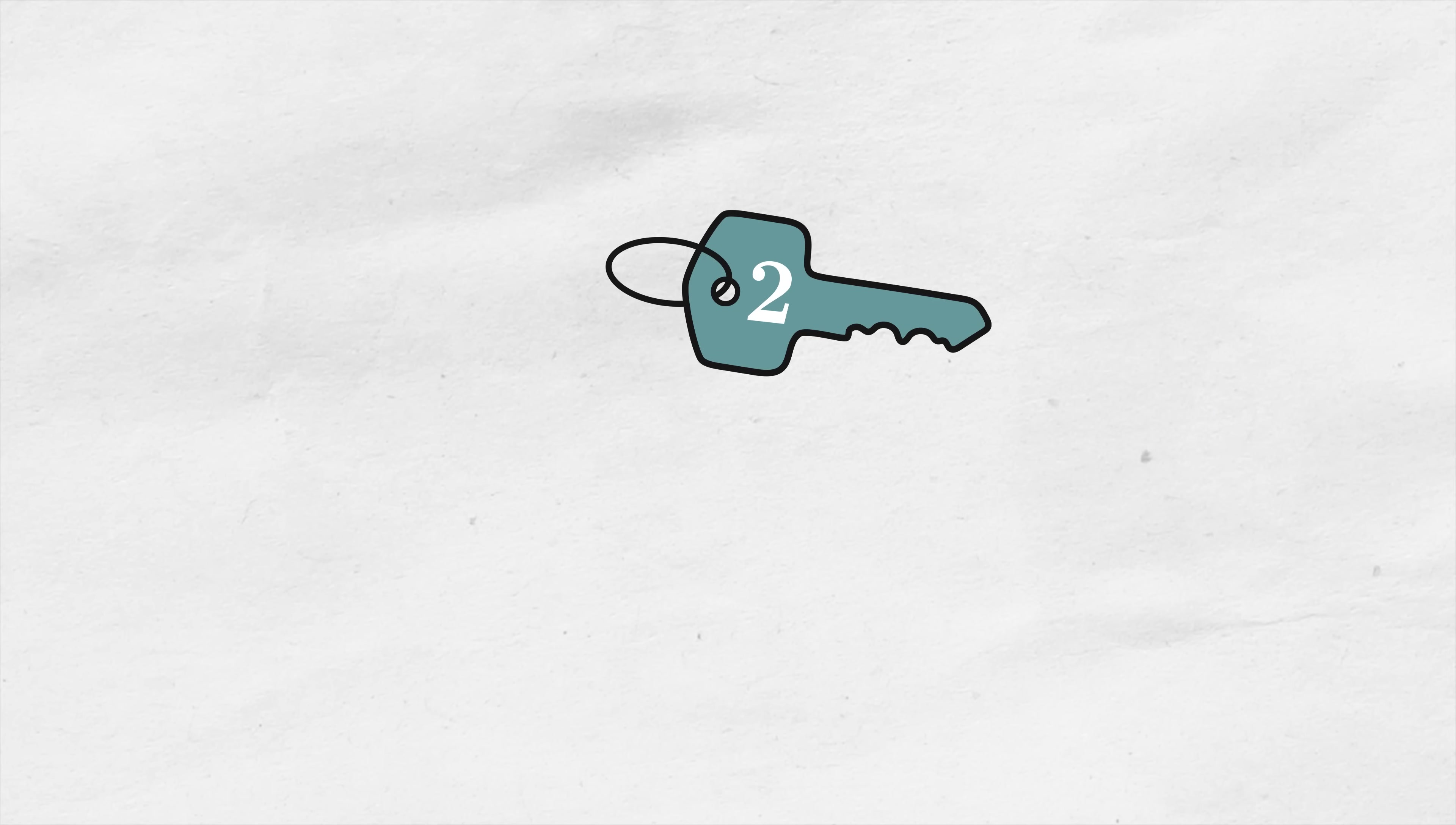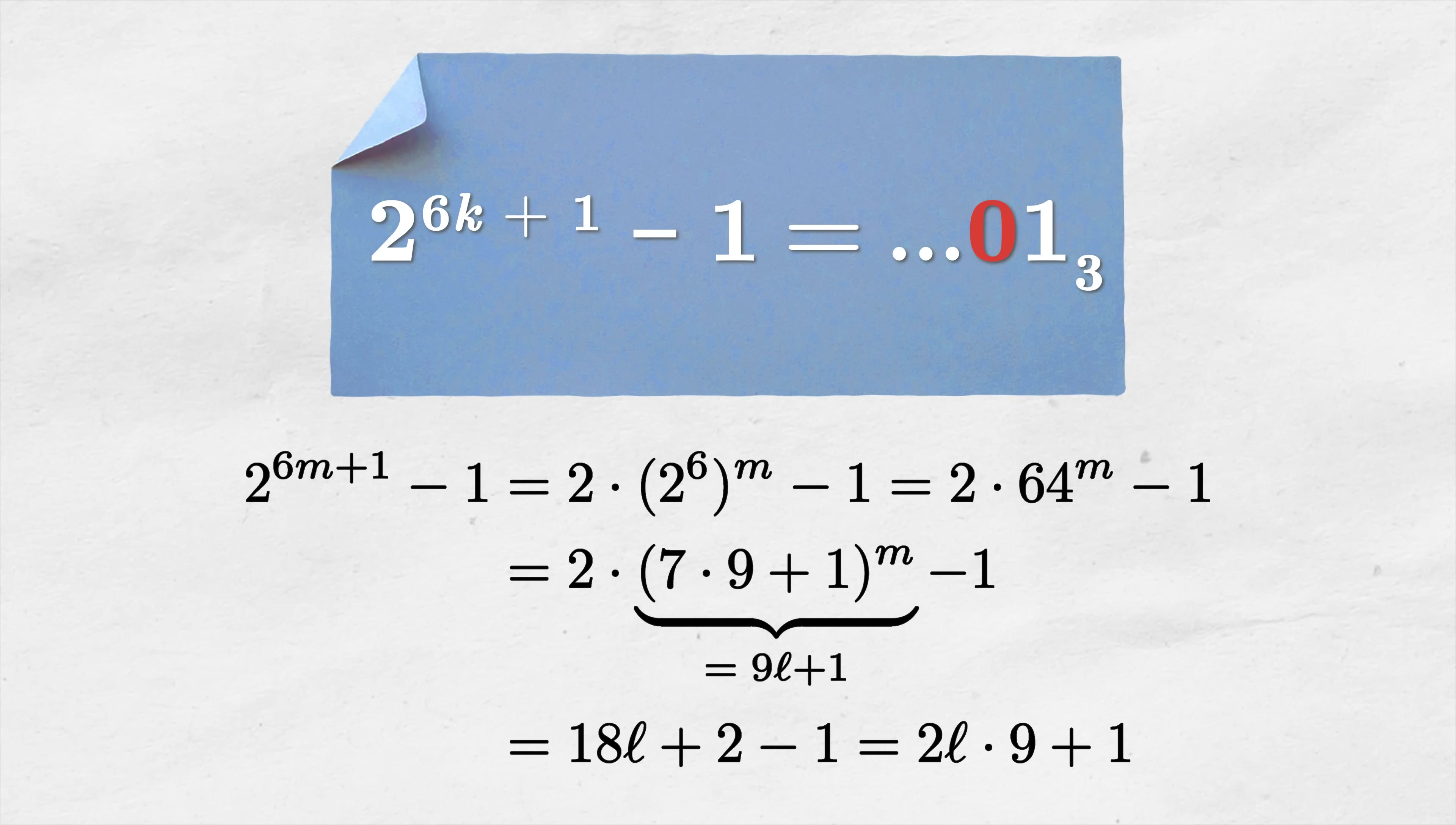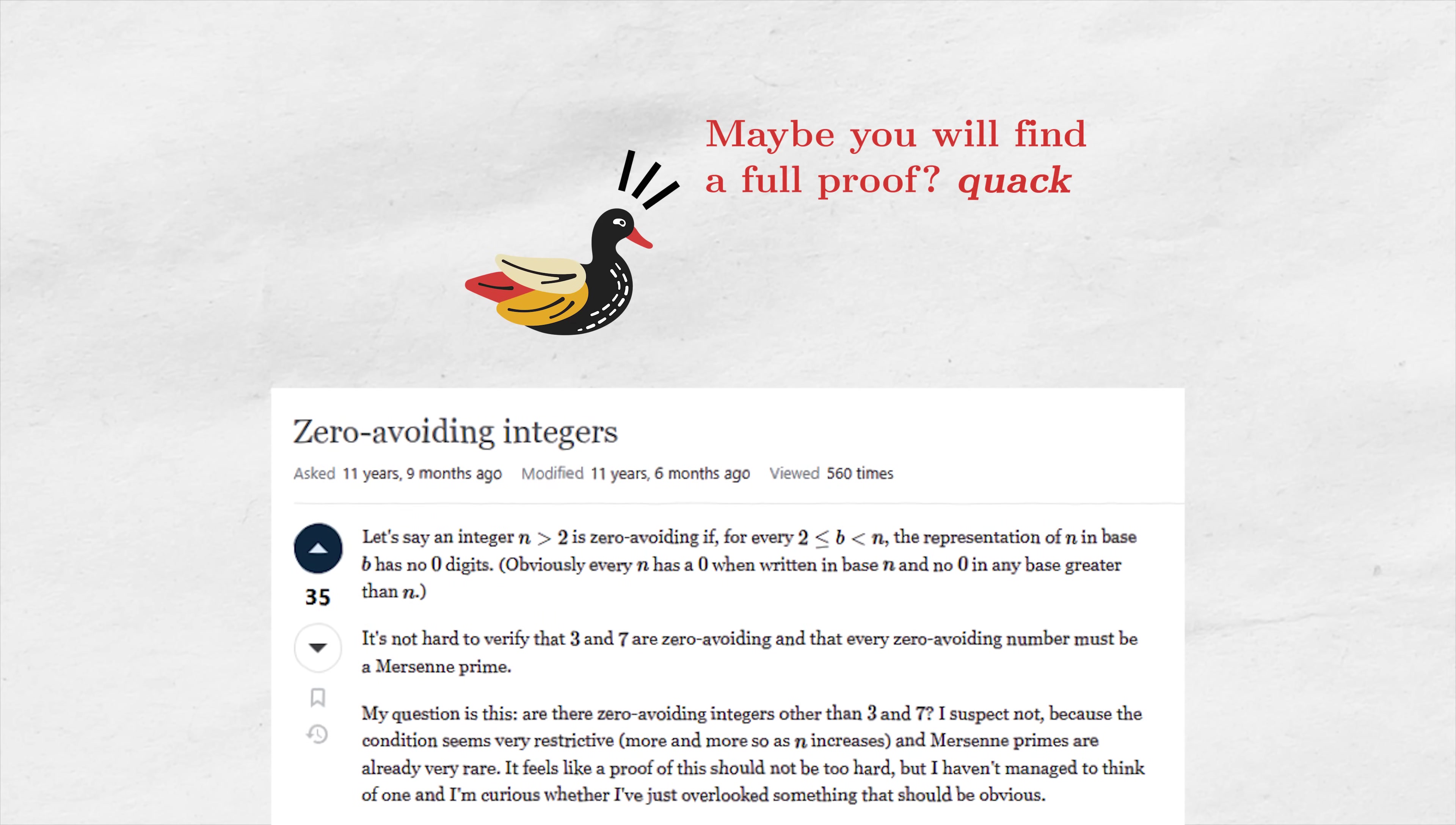And now the key is base 3. For example, we can prove that for primes of type 2 to the power of 6k plus 1 minus 1, the tenth digit in base 3 representation is always 0. It's easily done by considering the remainder this number gives when dividing by 9. But further than that? In similar fashion, we can also exclude other cases, but it seems like these exclusions never complete the proof. I will not go into much detail here. I'll just leave a link to a proper math stack exchange thread and leave it open as it is right now.